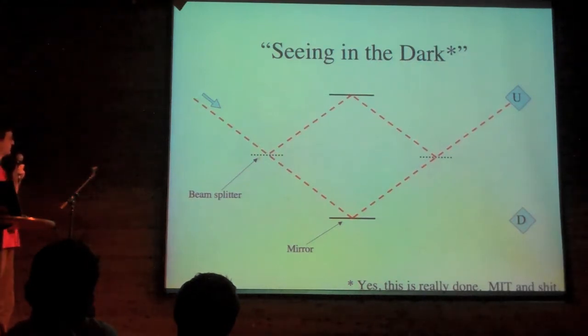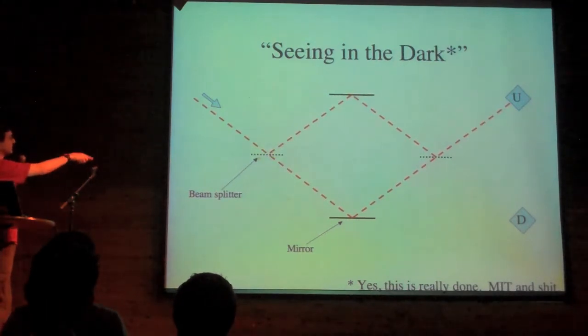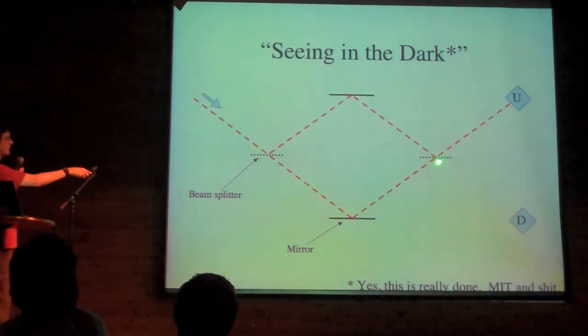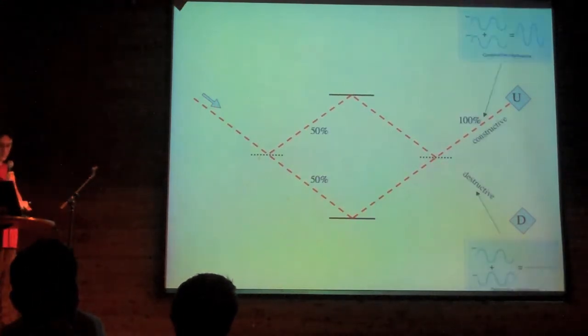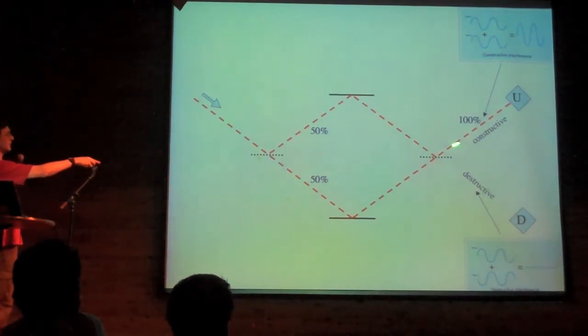A beam splitter is a fancy word for glass. Half the time it goes up here, half the time it goes down here. These are normal mirrors, bounce the beam back together, and you have completely destructive interference going down this way, and completely constructive interference going up this way.